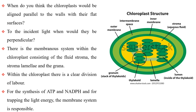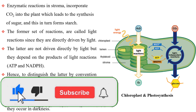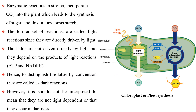There is a membranous system within the chloroplast consisting of the fluid stroma, the stroma lamellae, and the grana. Within the chloroplast, there is a clear division of labor. The membrane system is responsible for trapping light energy and for the synthesis of ATP and NADPH. Enzymatic reactions in the stroma incorporate carbon dioxide into the plant, which leads to the synthesis of sugar and in turn forms starch. The former set of reactions are called light reactions, since they are directly driven by light. The latter are called dark reactions by convention, though this should not be interpreted to mean that they are not light-dependent or that they occur in darkness.